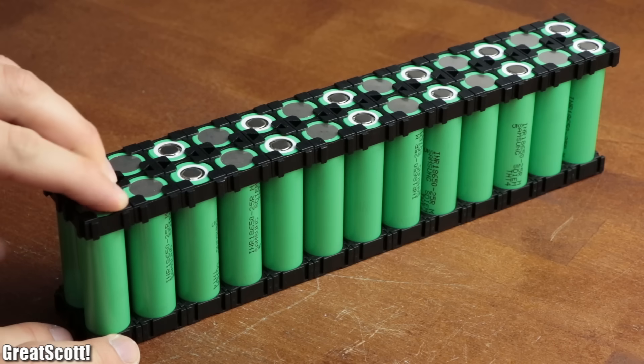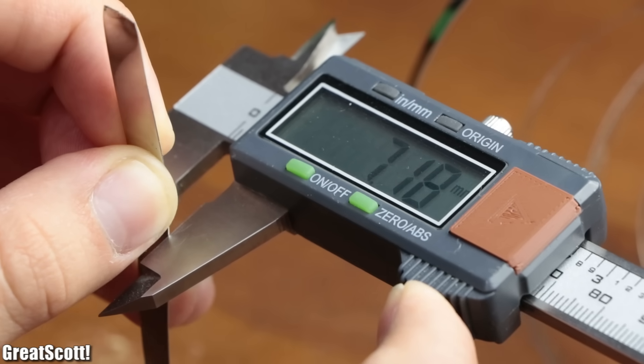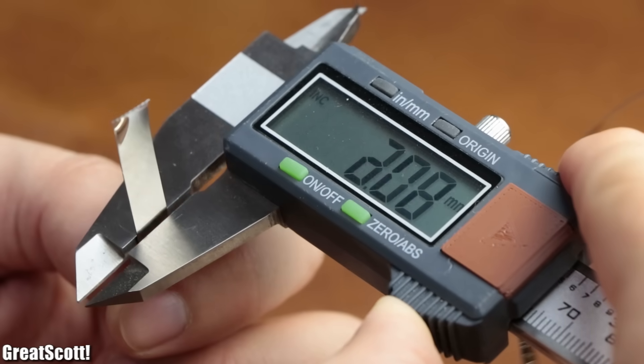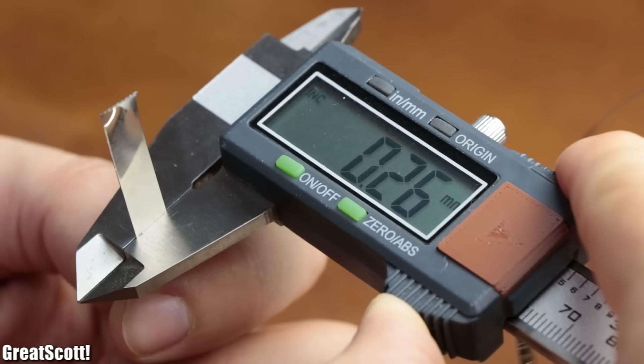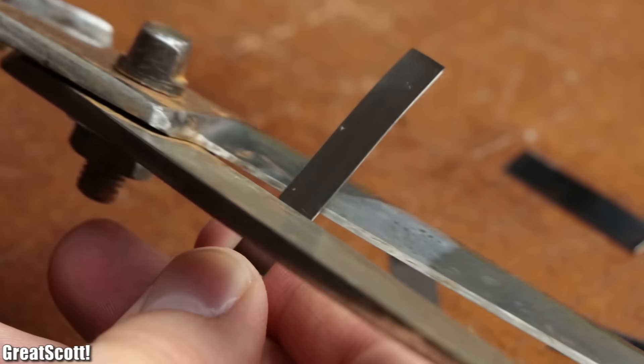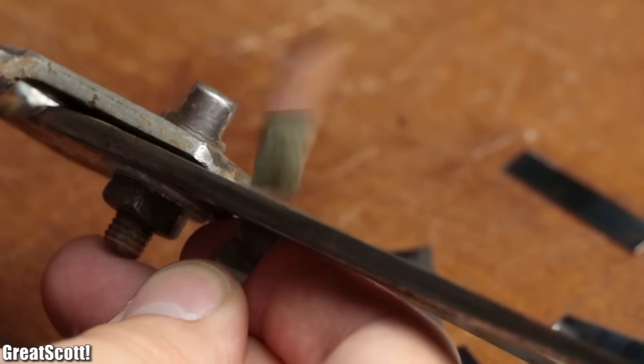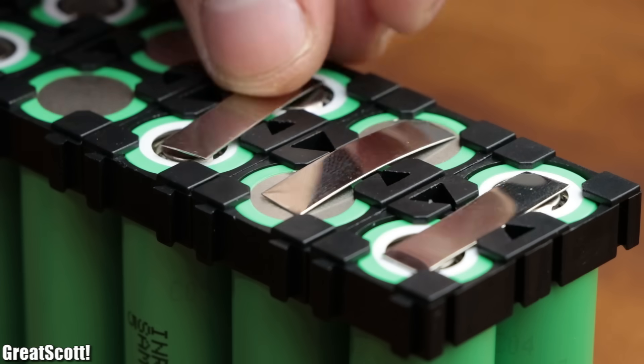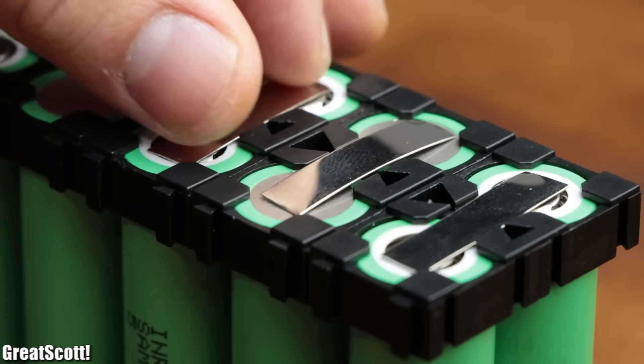To connect the cells to one another, I got this 7 millimeter wide and 0.3 millimeter thick nickel ribbon which can handle up to 30 amps. So I started creating 26 smaller pieces of the nickel ribbon which were long enough to connect all the parallel cell pairs.